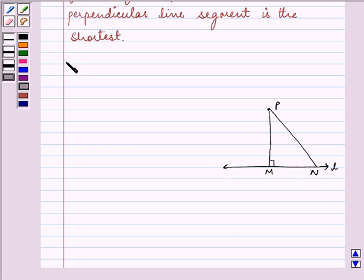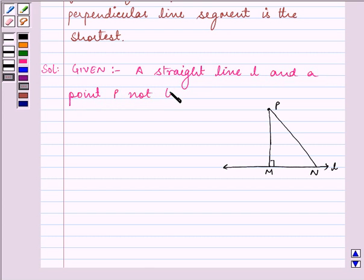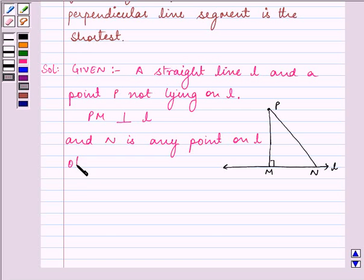So we are given in the question that a straight line L and a point P not lying on L. Also PM is perpendicular to L, and N is any point on L other than M.